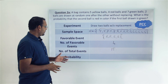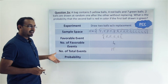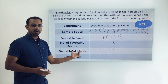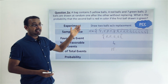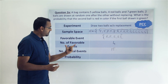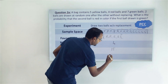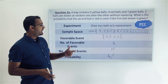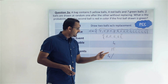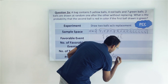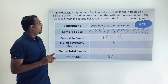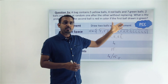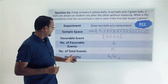Now we have all the information needed. The probability is the number of favourable events divided by the number of total events. The probability of drawing the second ball as red in color is 4 divided by 15. So, the probability of drawing the second ball as red, given that the first ball drawn was green, is 4/15.